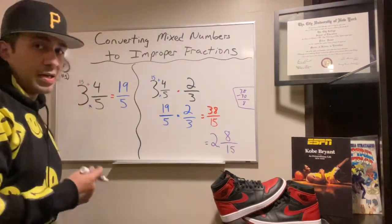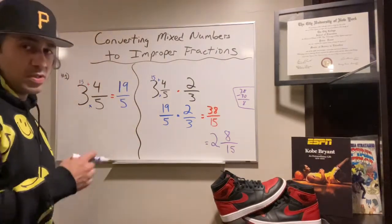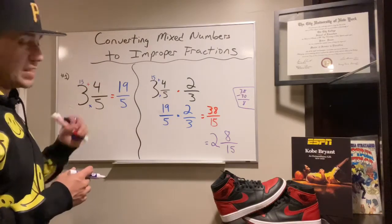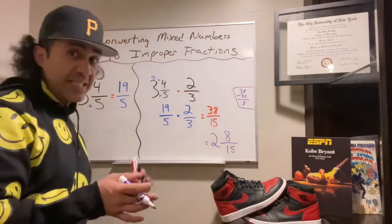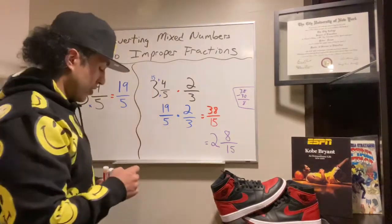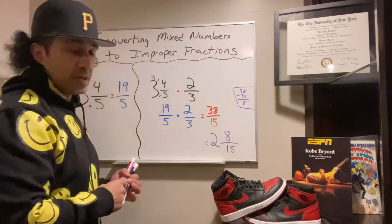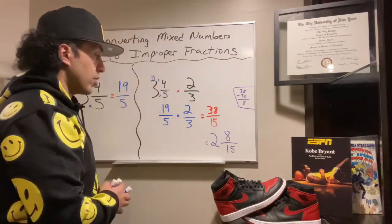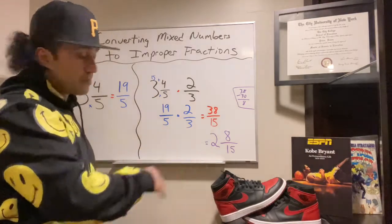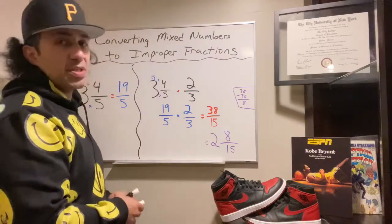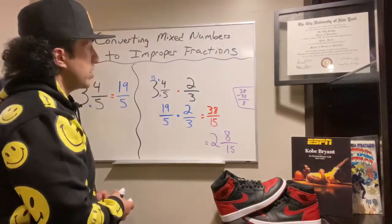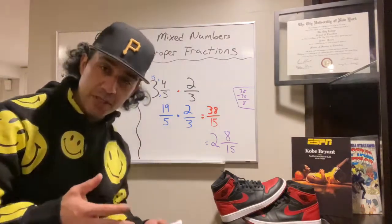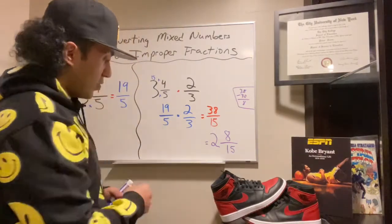So there you have it. There was a lot going on in this video so let's take a step back. We converted the mixed number of three and four-fifths to 19-fifths. We were then asked to multiply three and four-fifths times two-thirds. We converted three and four-fifths to 19-fifths, kept multiplication, kept two-thirds, and multiplied across to get 38 over 15. Then we converted the improper fraction of 38 over 15 to the mixed number of 2 and 8-fifteenths.